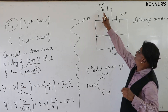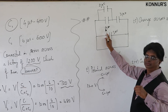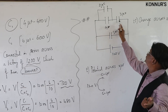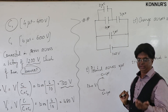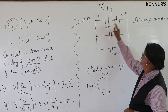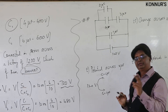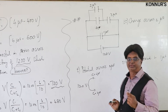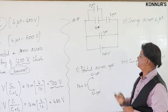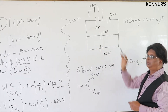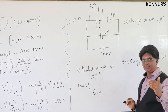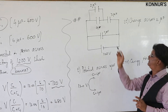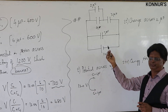Simplification: 2 and 4 in parallel gives 6 microfarad. Then 6 and 3 in series: C_eff = (6×3)/(6+3) = 2 microfarad. This 2 microfarad and 1 microfarad in parallel gives a resultant network capacitance of 3 microfarad.